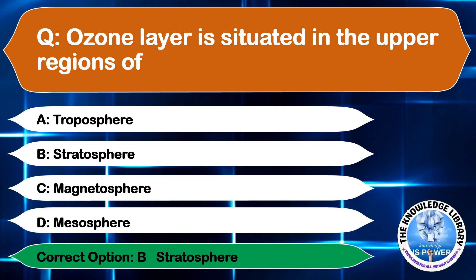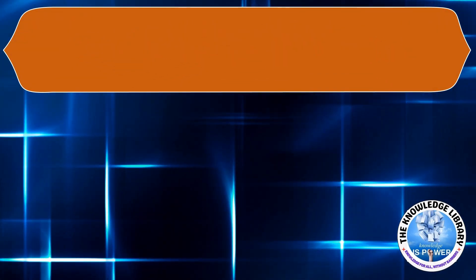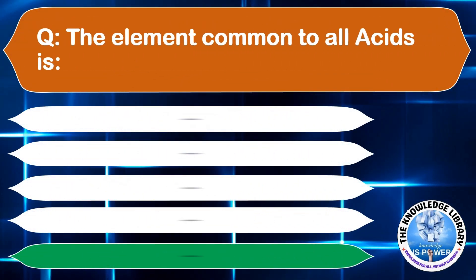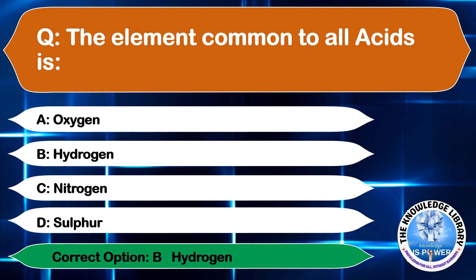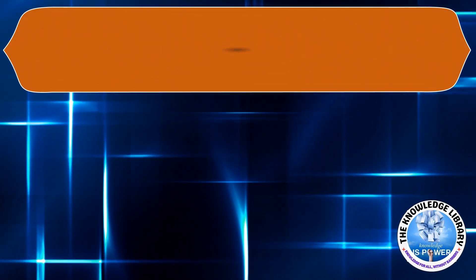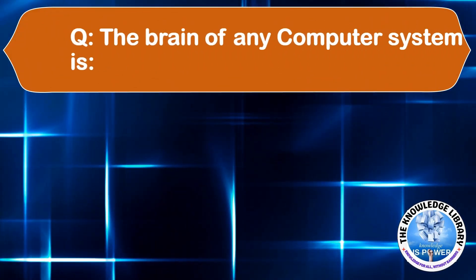The element common to all acids is: A: Oxygen, B: Hydrogen, C: Nitrogen, or D: Sulfur. The correct answer is option B, Hydrogen.